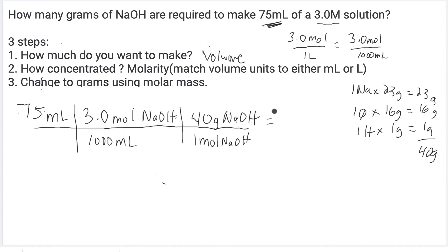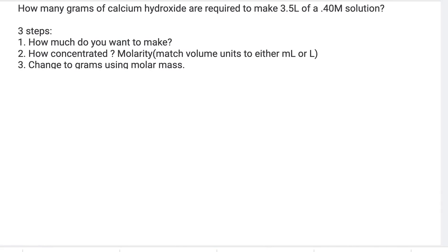Then you take your calculator: 75 times 3 times 40, then divide by everything on the bottom, divide by 1000, and I get 9. Because this has two significant digits, I'm going to write 9.0 grams NaOH.